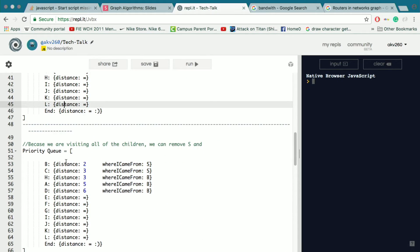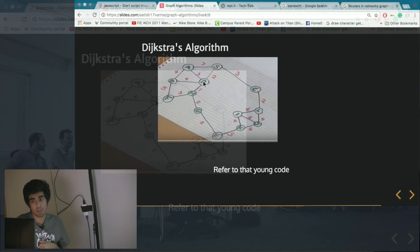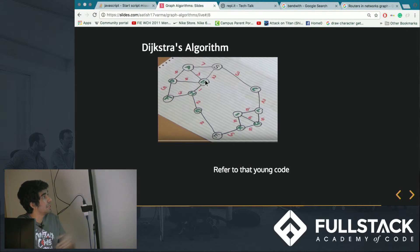So with B, because currently B has the shortest distance from the starting point of 2, we want to exploit B's children now. So A, D, and H. So for H it would be equal to 3 because 2 plus 1. D would be 4 plus 2, 6.